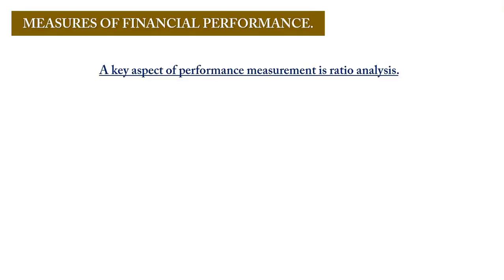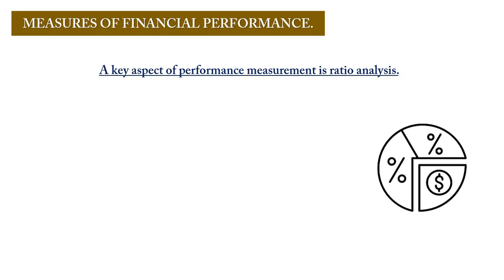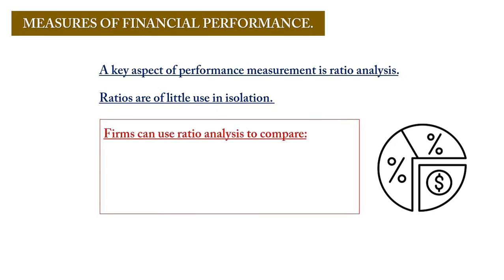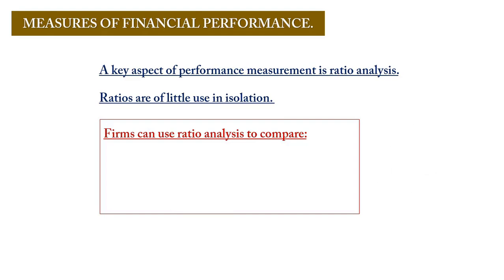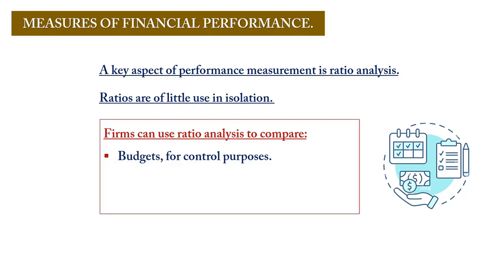A key aspect of measuring a business's performance is the use of ratios. Ratios normally do not mean much if they are used in isolation — you have to interpret them in addition to other factors to make sense to the business. Typically, firms use ratios to accomplish budgetary or control purposes.